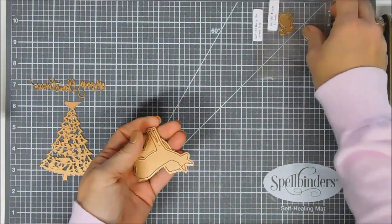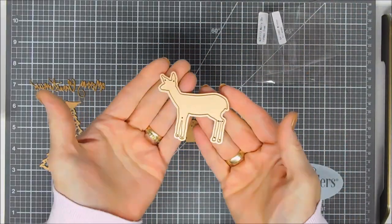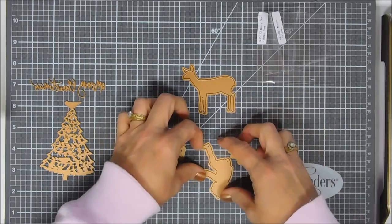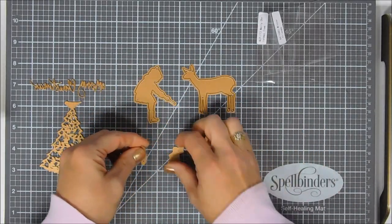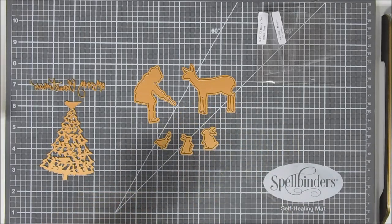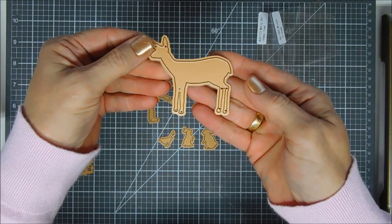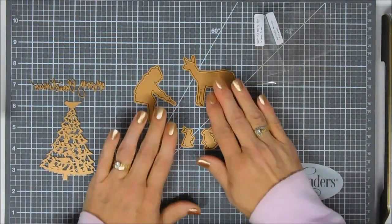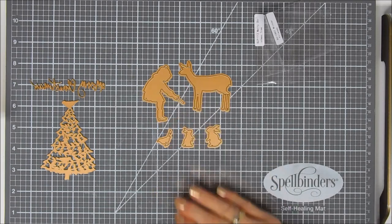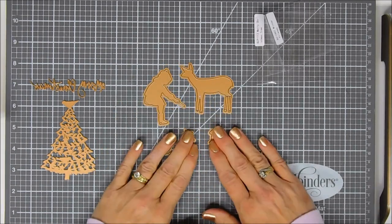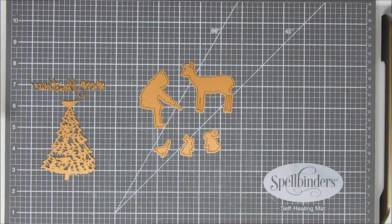This set here is not a glimmer plate, it's just a die set called the Winter Friends die set. It has six pieces - a little deer, two little bunnies, and a bird or cardinal. They're all silhouettes. I thought it'd be fun to combine both of these together to create a card with the glimmer hot foil system since we have glimmer plates and silhouettes.